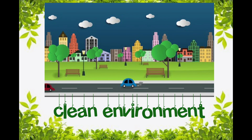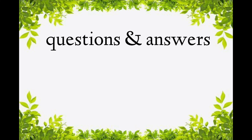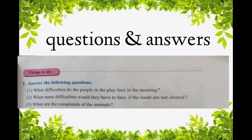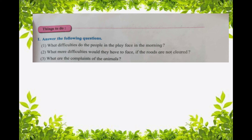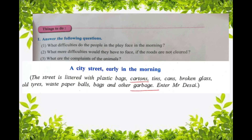The lesson is over, children. I think you must have understood the lesson — it's very easy. Thank you. Hello students, we have finished the lesson. For your homework, I will give you two questions from the text. You have to write in the homework book one time, read the lesson, and do the question answers in the textbook notebook. First question: What difficulties do the people in the play face in the morning?